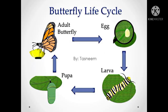Now the life cycle of a butterfly. In the life cycle of the butterfly, there are four stages. The first stage — the egg. The adult female butterfly lays eggs. After the eggs get hatched, the second stage comes, which is the larva.